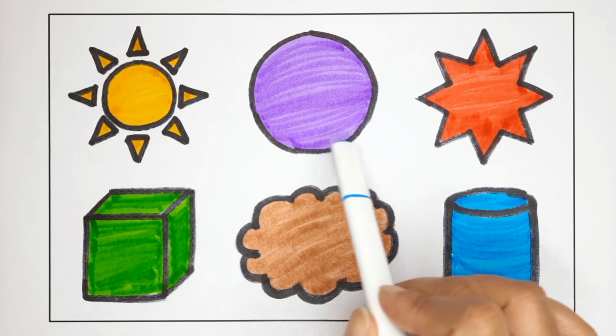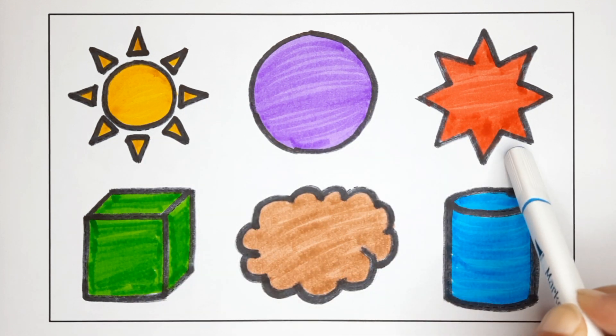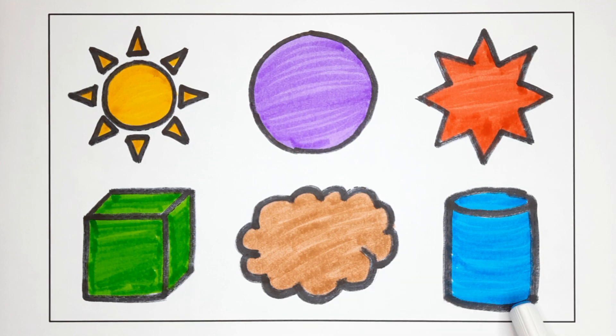Sun, circle, eight point star, cube, cloud, cylinder.